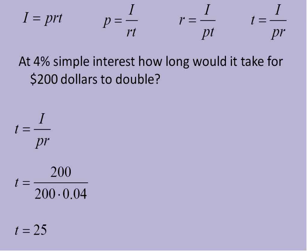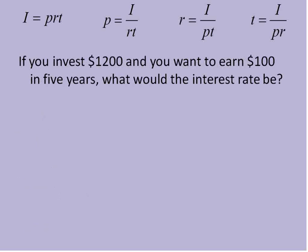So that would be my time at the end. Time is always measured in years in this equation. So it would take 25 years for $200 to double at 4% simple interest.